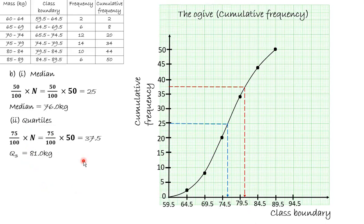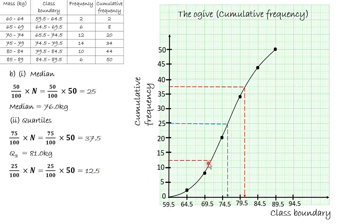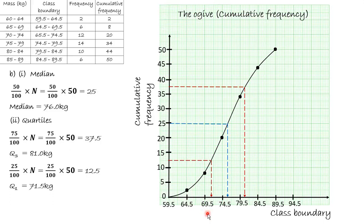The lower quartile corresponds to 25 percent of the total: 25 percent of 50 is 12.5. We find 12.5 on the cumulative frequency axis, draw a horizontal line to meet the curve, then drop a vertical line down. Counting approximately 4 small squares from 69.5: 4 times 0.5 is 2, and 69.5 plus 2 gives us a lower quartile of 71.5 kilograms.